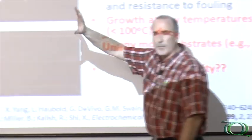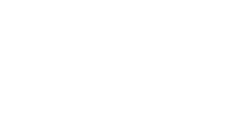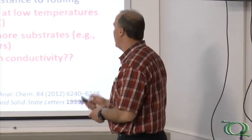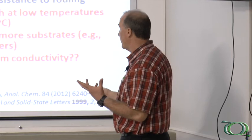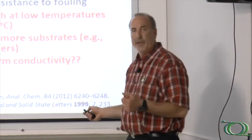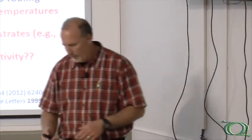The top view image of the material I'll speak about for the rest of the seminar today is grown with 10 SCCM of nitrogen. We add a small flow of nitrogen to the gas, which adds nitrogen to the film and makes it electrically conducting. This material has many very nice properties: low background signals and wide potential windows, weak adsorption, and good activity without a lot of pretreatment. The key benefit is growth at near room temperature, giving many more substrates that can be coated. The conductivity is fairly uniform over the whole film, which is very important for electrochemical use.